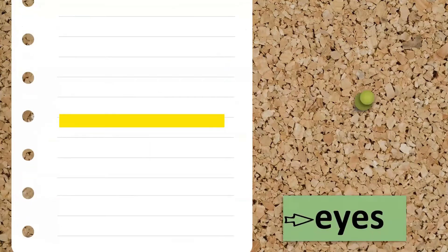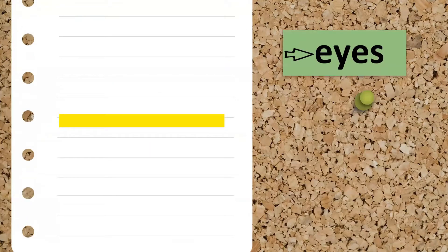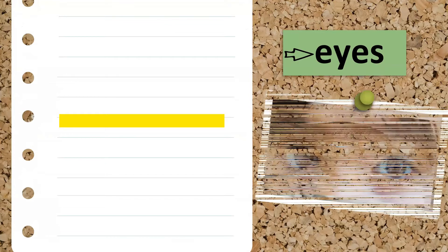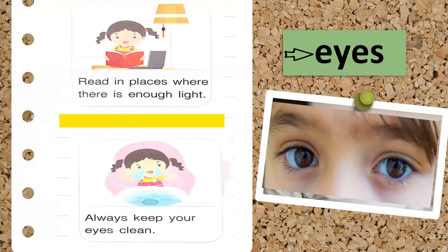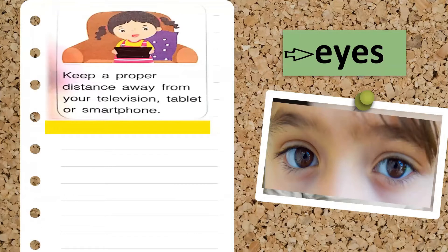Let's start with our eyes. How do we take care of our eyes? First, read in places where there is enough light — do not read in dim places. Also, always keep your eyes clean by washing them with clean water.